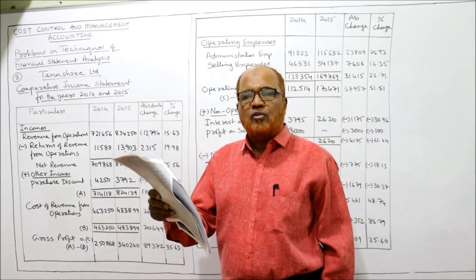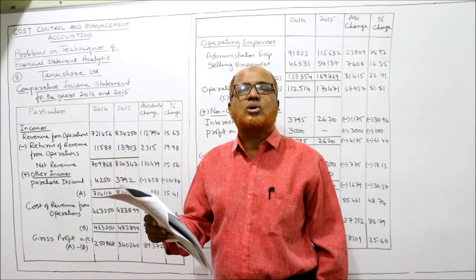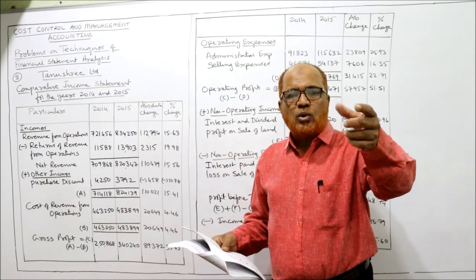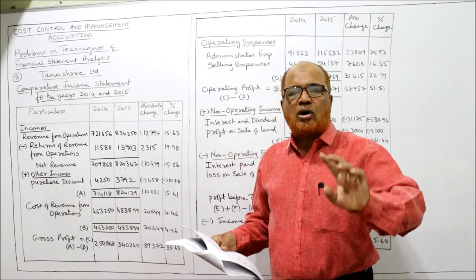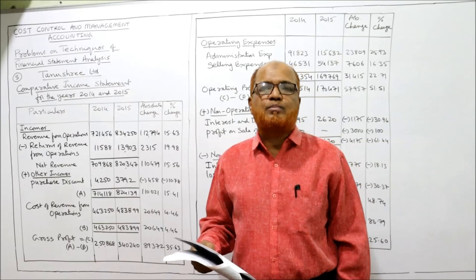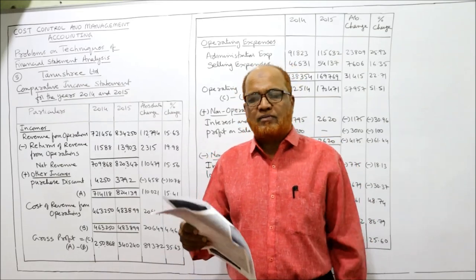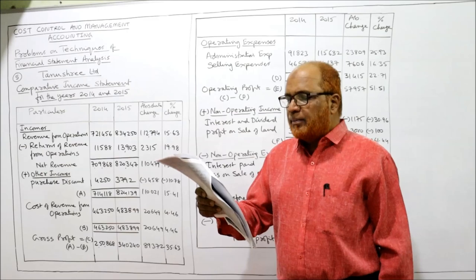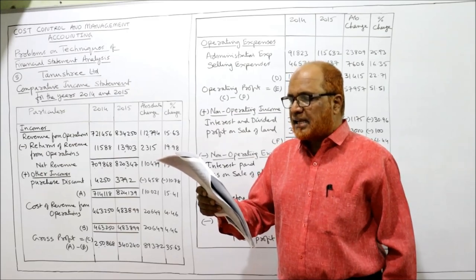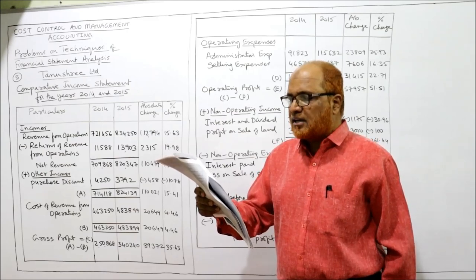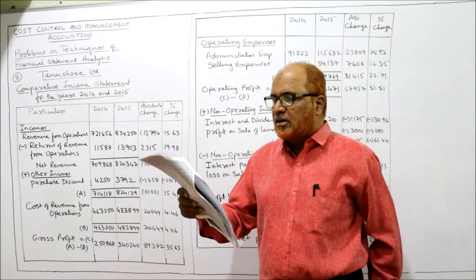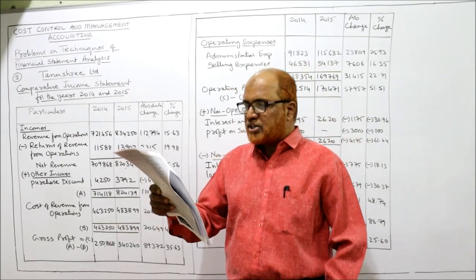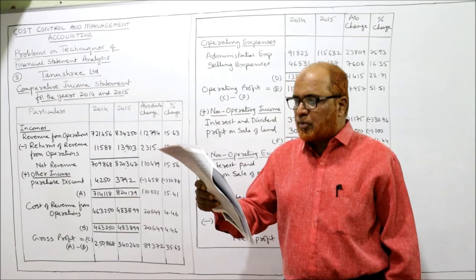Then cost of revenue from operations — these are the cost of sales. From sales if we deduct cost of sales we get the gross profit. And then we have administration expenses, selling expenses, interest paid, interest and dividend, loss on sale of plant, profit on sale of plant, purchase discount, income tax, and net profit.